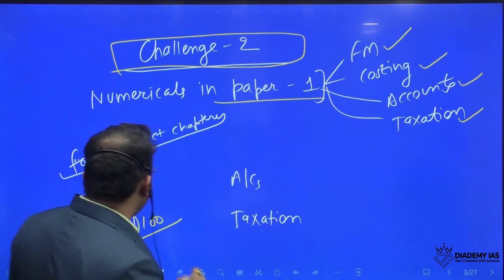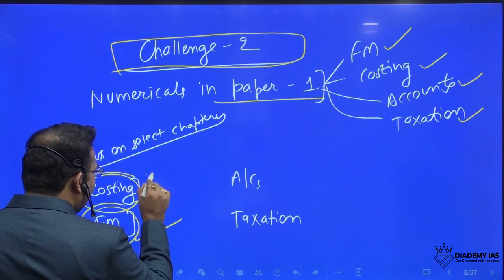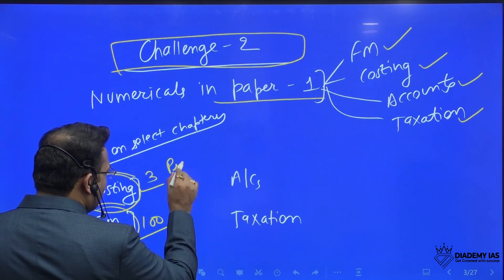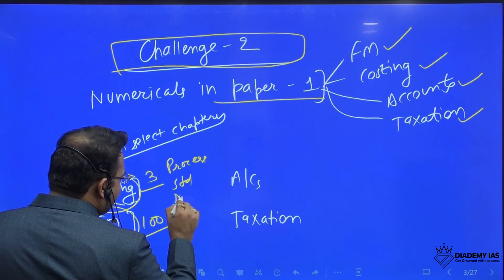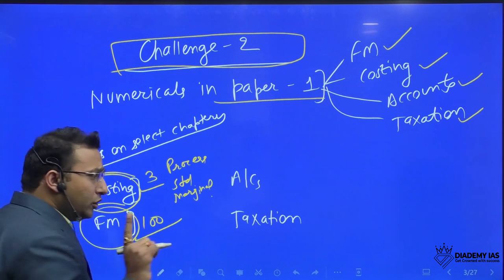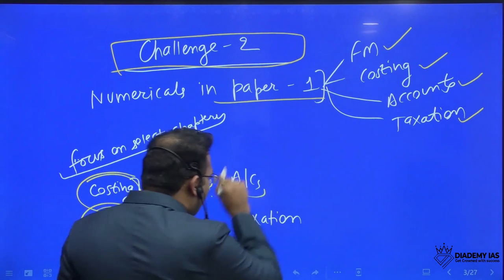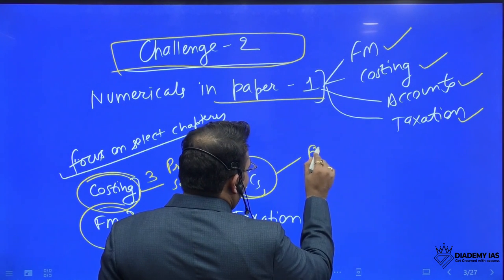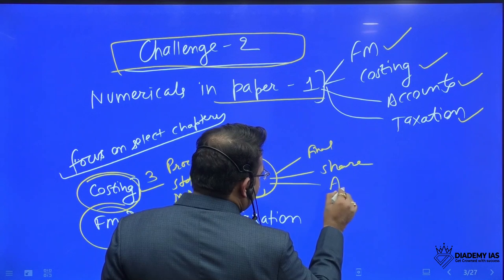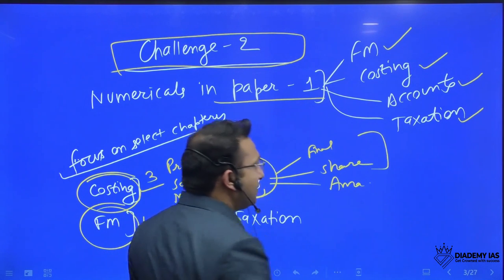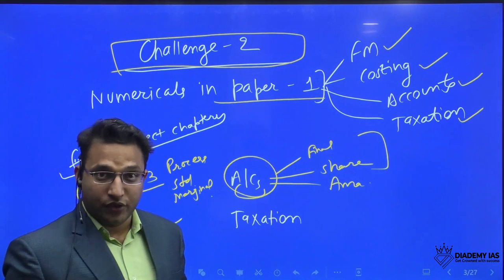But if you see in the costing, only three important topics are there. Process costing, standard costing, and marginal costing, where you need to do practice. And in the accounts also, there are three topics only. Final accounts, shares accounting, and amalgamation. Out of this, final account and share accounting is more important.